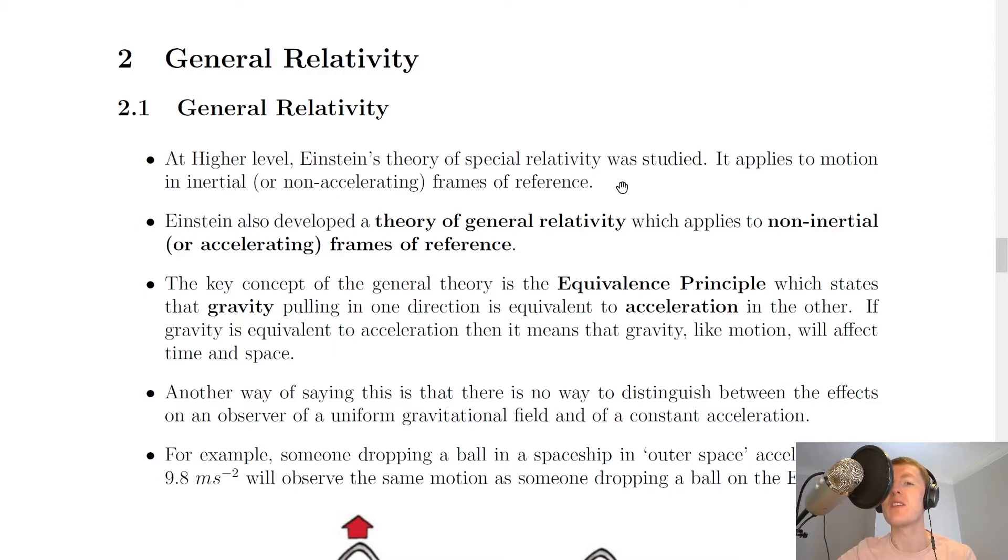So you should remember from special relativity in the higher course that Einstein had two postulates, which were that the laws of physics are the same for all observers, and that the speed of light in a vacuum is the same for all observers. And remember special relativity led to things like time dilation and length contraction.